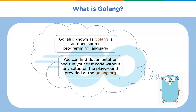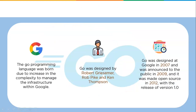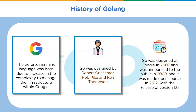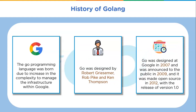The Go programming language was born due to the complexity of managing infrastructure and codebases within Google. The language creators, all from Google, had a clear goal: design a programming language that would be easy to use but still cover the main challenges of working with the company's intricate systems. Go was designed by Robert Griesemer, Rob Pike, and Ken Thompson at Google in 2007.